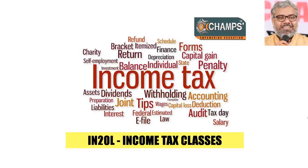The sections we referred to in this chapter are: Section 6 for determination of residential status, Section 5 for determining the scope of total income or tax incidence, and Section 9 — very important — which covers incomes deemed to accrue or arise in India. Section 7 on deemed receipt in India is less important. Section 9 is very critical; everyone should be thoroughly familiar with that entire chart. We solved some questions applying these provisions, and today we'll continue with more problems and close this topic.